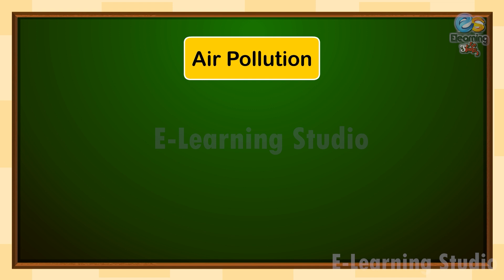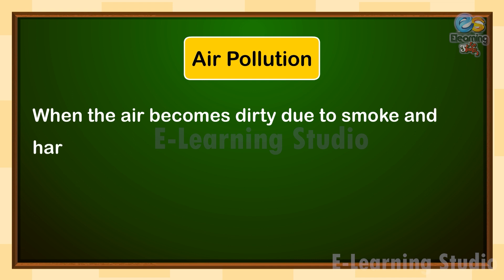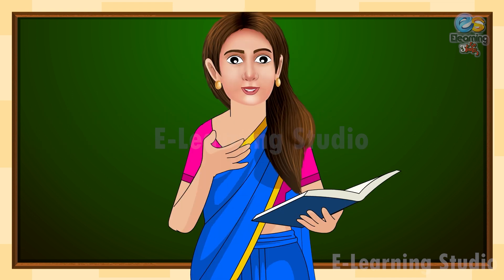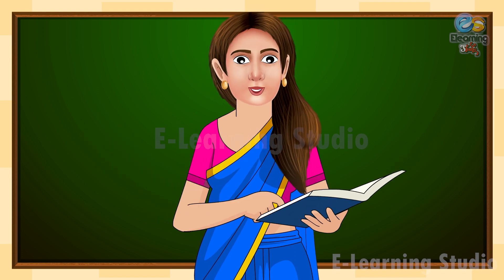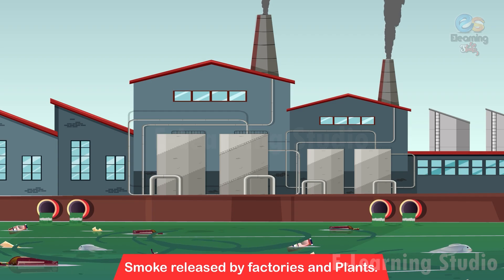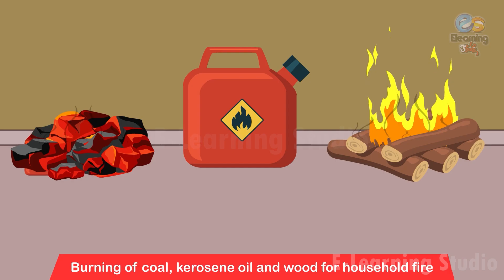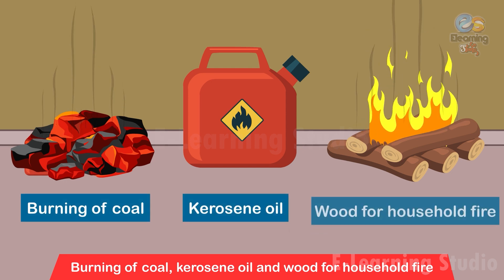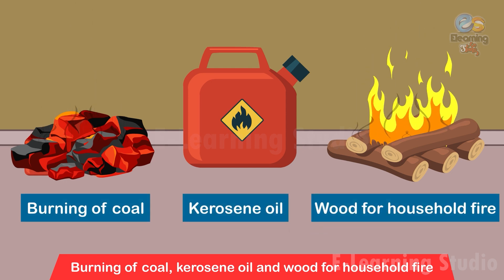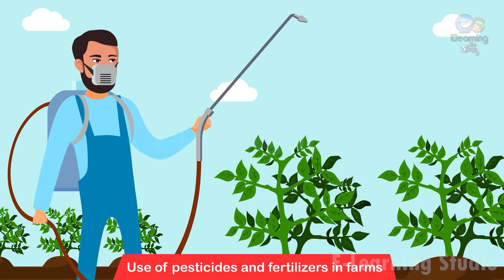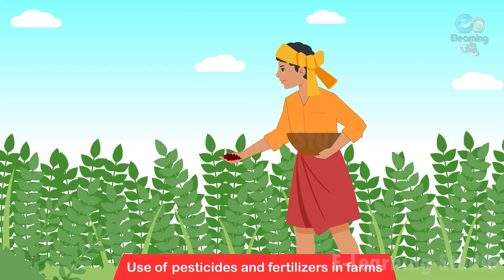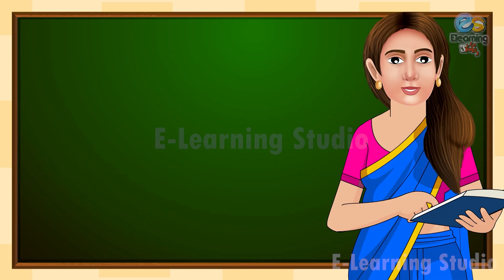Air Pollution: When the air becomes dirty due to smoke and harmful gases, it is called air pollution. Some major causes of air pollution are: 1. Smoke released by factories and plants, 2. Smoke released by vehicles, 3. Burning of coal, kerosene oil and wood for household fire, 4. Use of pesticides and fertilizers in farms.